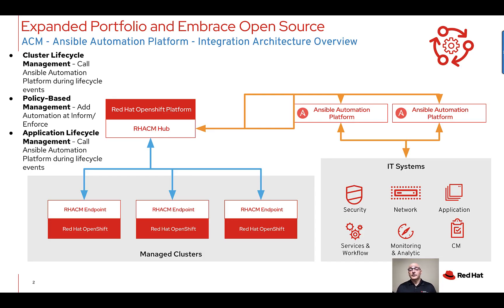Red Hat Advanced Cluster Management for Kubernetes integrates with one or more Ansible Automation platforms. You simply add the credentials into your Red Hat Advanced Cluster Management configuration. This allows you to run a number of different job templates that you can execute on any third party or integrated systems through this integration with the Ansible Automation platform.